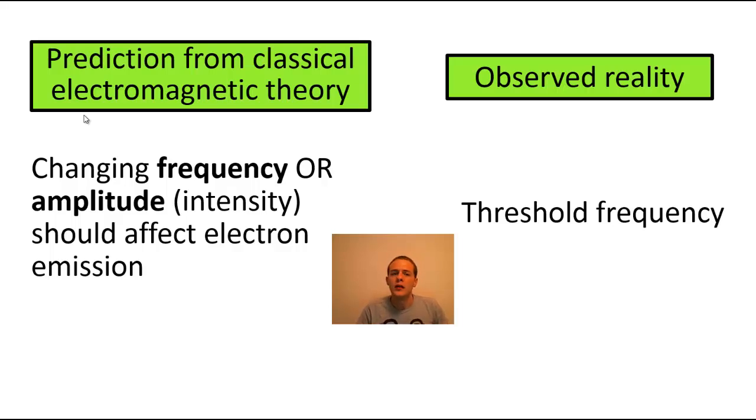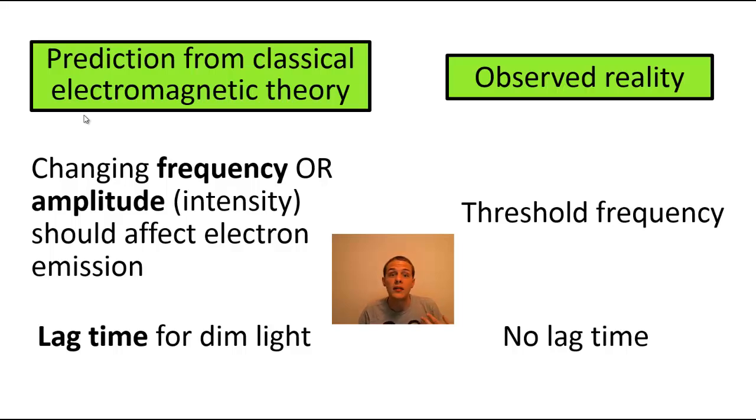Another difference between what classical theory would predict and what was really observed is that according to classical theory, if the light was very dim, then there should be a lag time. There should be a little bit of time that elapses between when the light is shown on the metal and when the electrons are released. But in reality, if you have this low intensity high frequency light, there was no lag time. The electrons were released instantaneously.